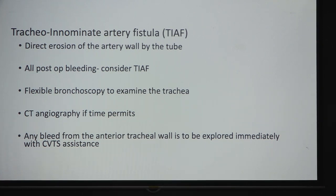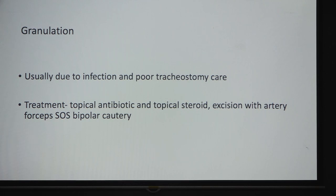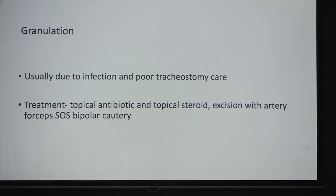A cautionary case: CT angiography was done with the tube in situ and no leak was seen, but there was high suspicion of tracheo-innominate fistula. When the tube was removed to examine, there was massive hemorrhage and the child could not be saved — emphasizing that the tube should never be removed in such a situation without surgical backup. Granulations are most frequently seen due to infection and poor tracheostomy care. Treatment is topical antibiotic and steroid, which works very well; Ciprofloxacin eye drops instilled around the stoma are also effective. If unmanageable, remove granulations with artery forceps and bipolar cautery, and change the tube.